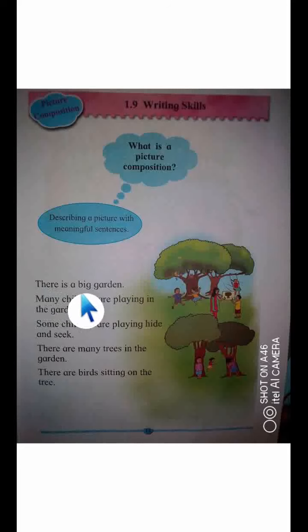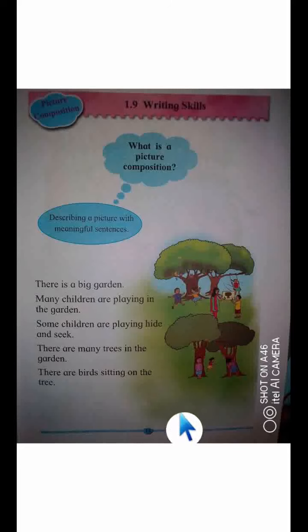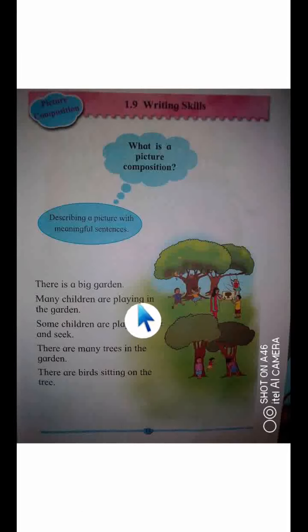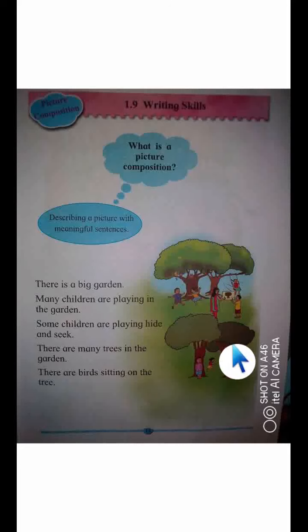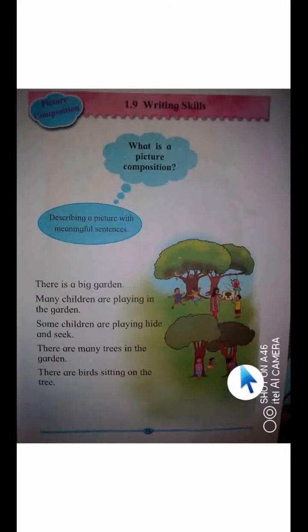Without wasting any time, I am going to read this and relate it to you. The very first sentence is: there is a big garden. As you can see in this picture, there is a big garden. Many children are playing in the garden. As you can see, there are so many children in the garden and they are playing.